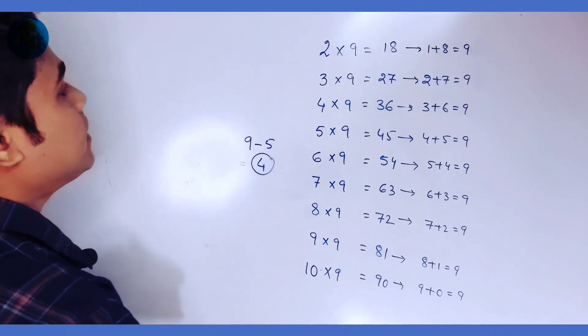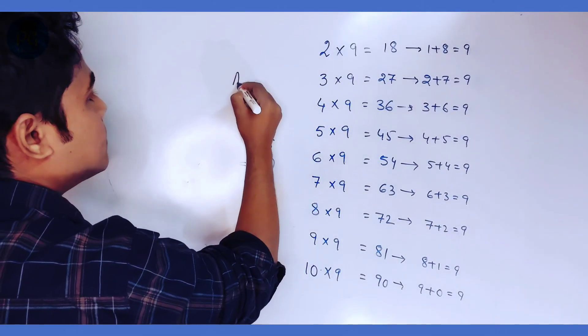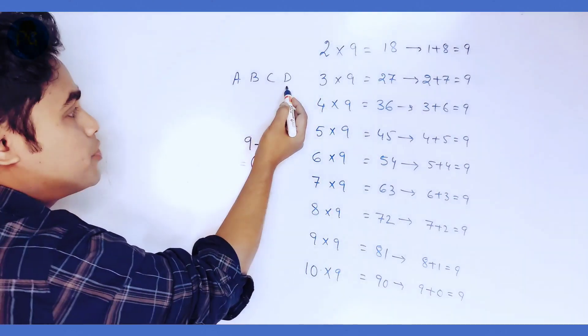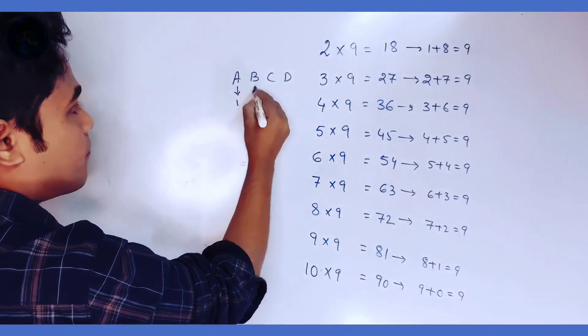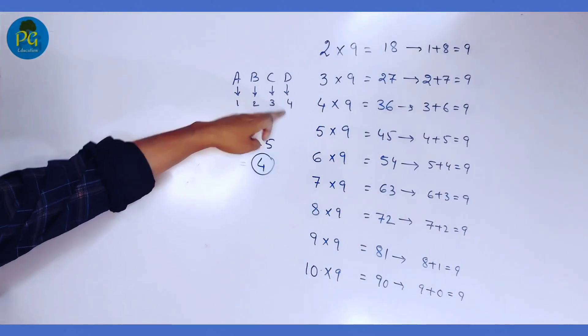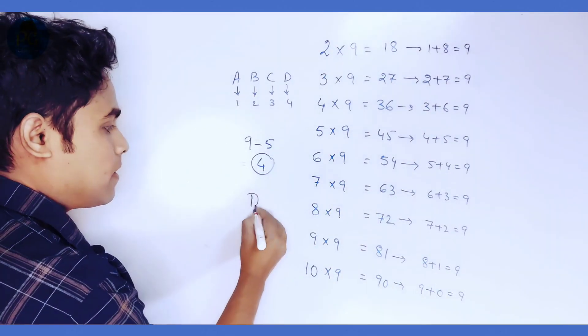Now, you see, in the alphabetic series A, B, C, D, D comes at the fourth position. So, the corresponding letter of 4 is D.